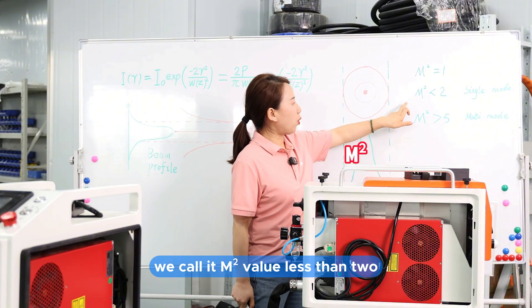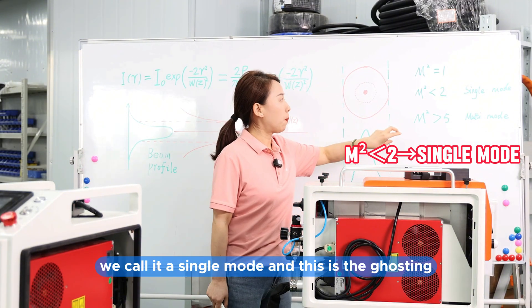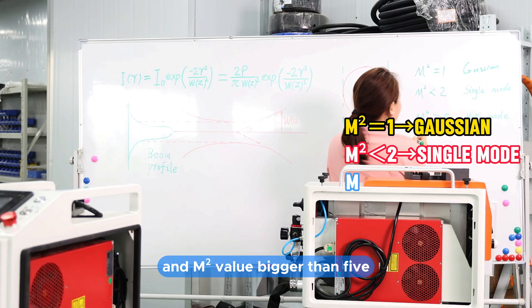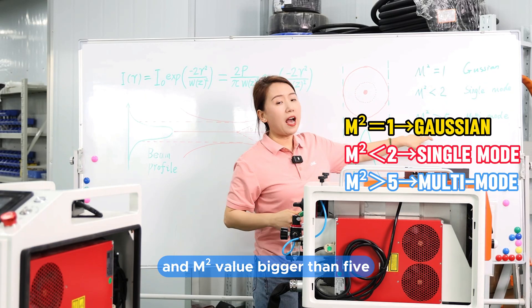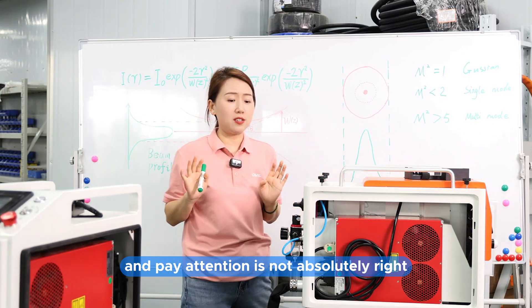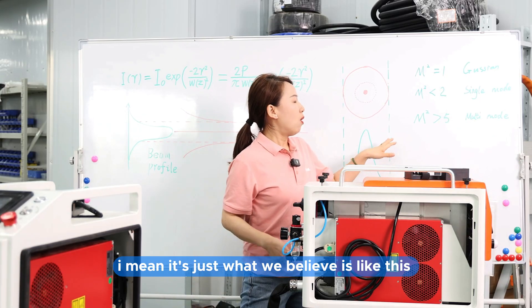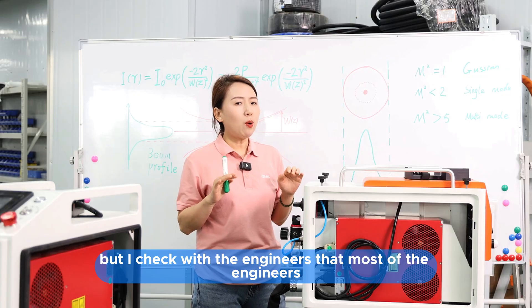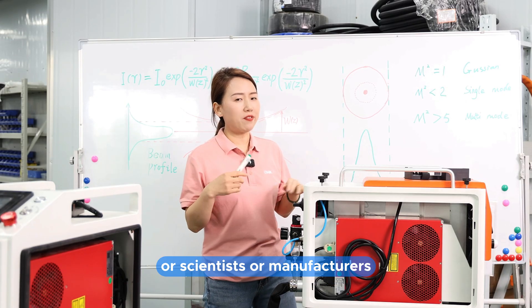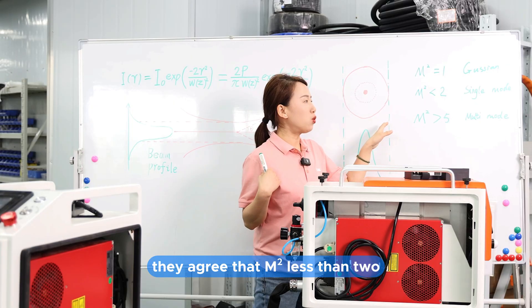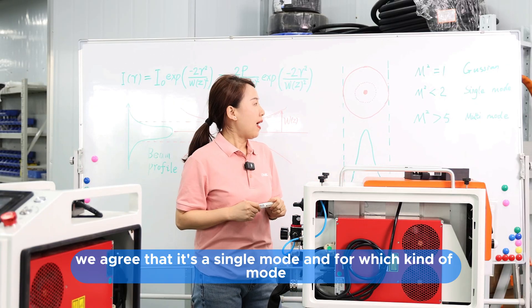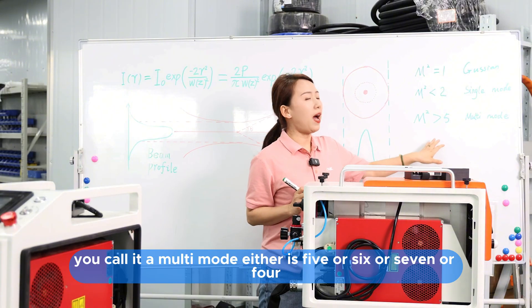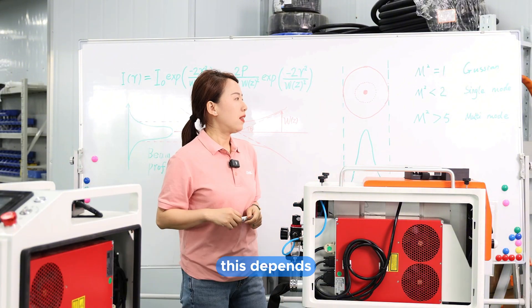M squared value less than 2 — we call it single mode, and this is a Gaussian beam. M squared value bigger than 5 — we call it multi-mode. Pay attention, it's not absolutely fixed. Most engineers, scientists, and manufacturers agree that M squared less than 2 is single mode. For which value marks multi-mode — whether it's 4, 5, 6, or 7 — this depends on the context.